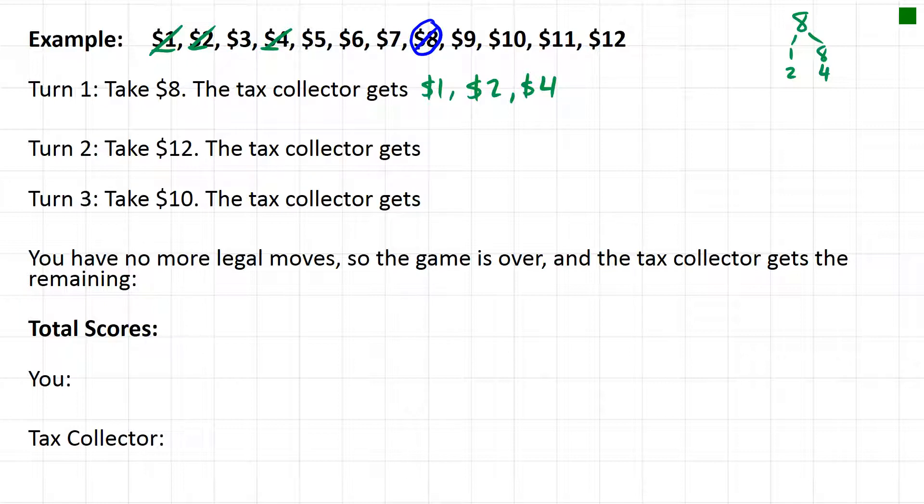Now I'm gonna pick the—I'm thinking, okay, I need the most expensive paychecks I can get right, or the most valuable one. So I'm gonna pick the $12 paycheck. So that's the one I'm gonna choose next. The tax collector is going to get any remaining paychecks that are factors of 12.